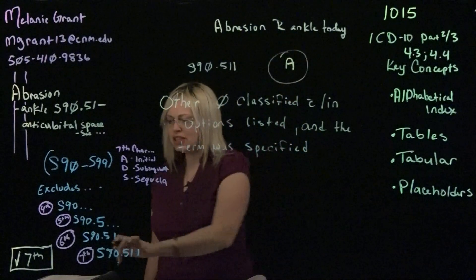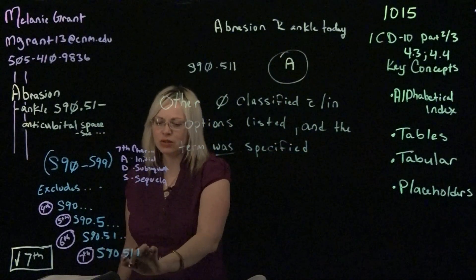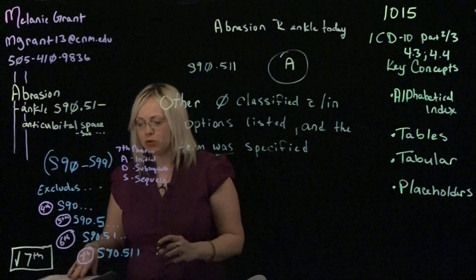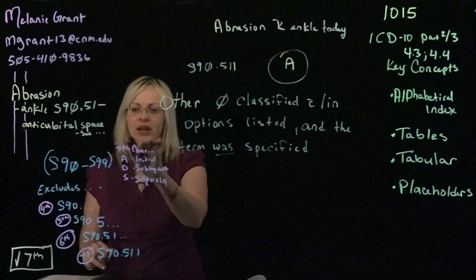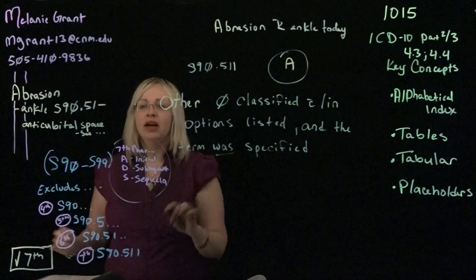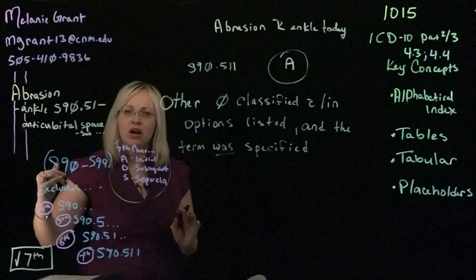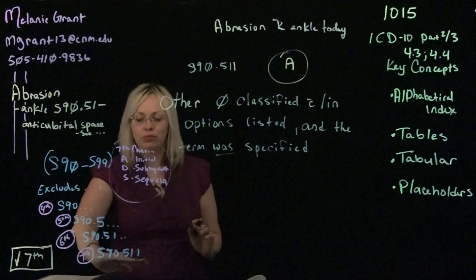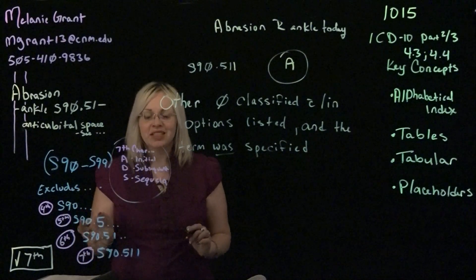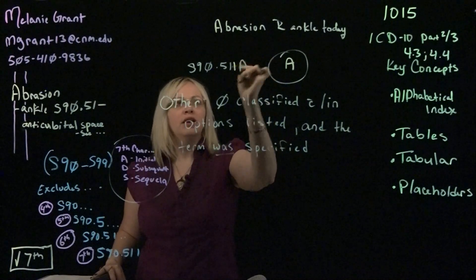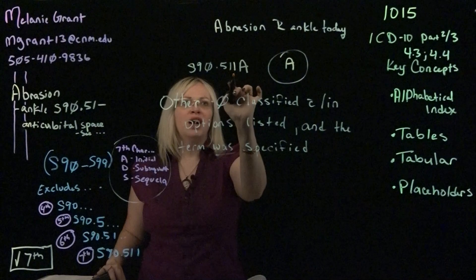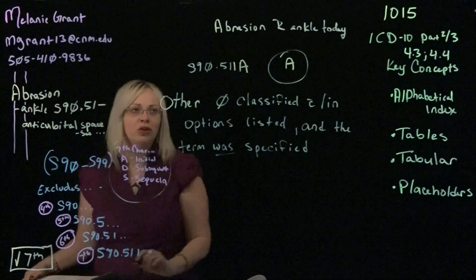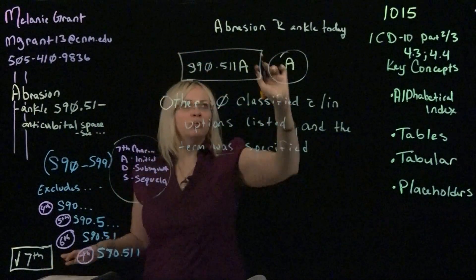You'll see a seventh-digit character indicator next to S90.511 with no further breakdown below it, so you go looking within the notes — typically right below the main category — where it lists seventh character options: A, D, S, and sometimes several more. We already know our seventh character is A for initial. Bringing that in: S90.511A — counting the digits: 1, 2, 3, 4, 5, 6, 7. That meets the seventh-digit requirement. S90.511A is the correct final code for a patient with an abrasion of the right ankle at an initial encounter.